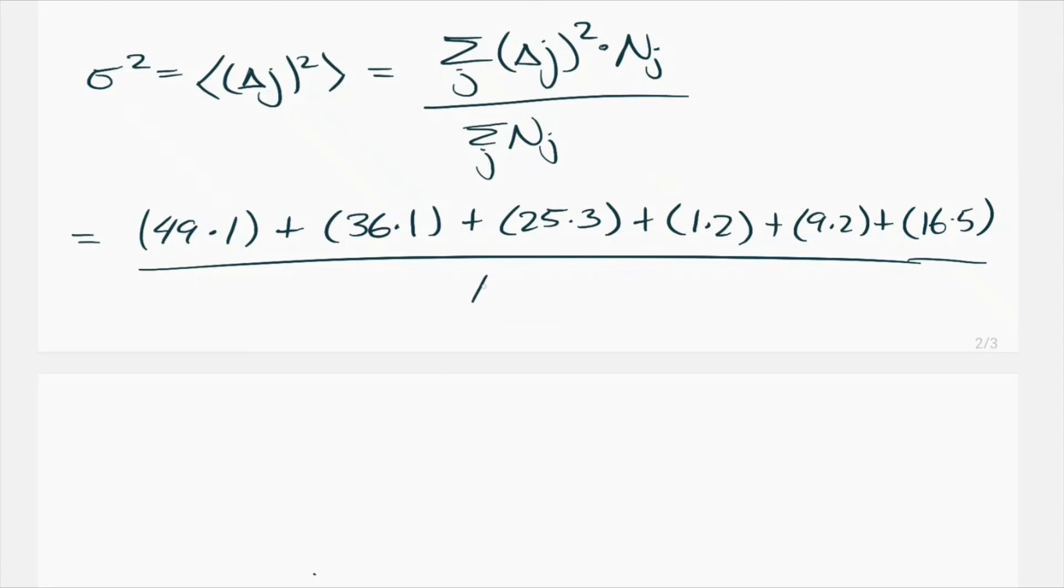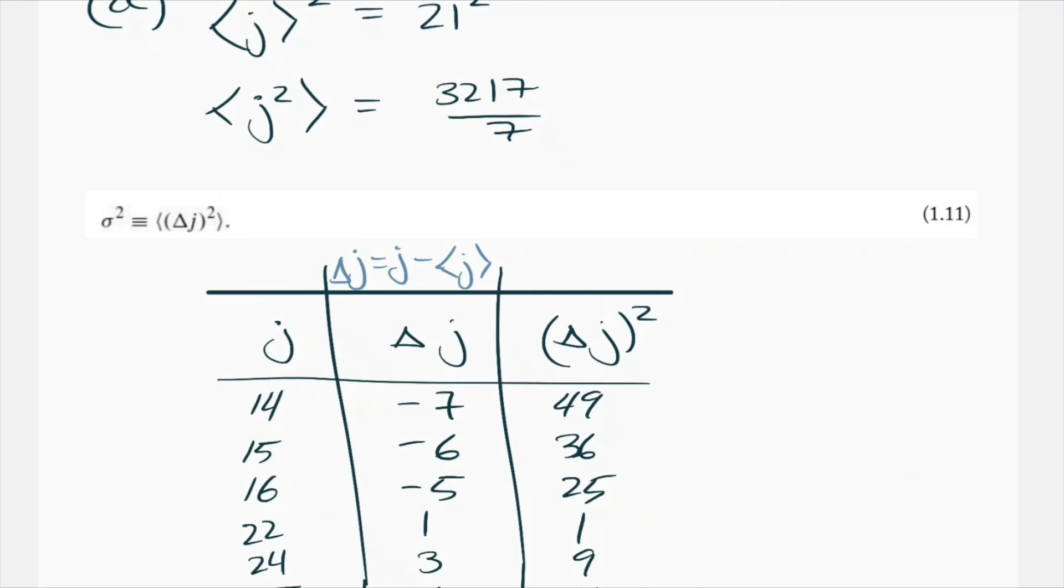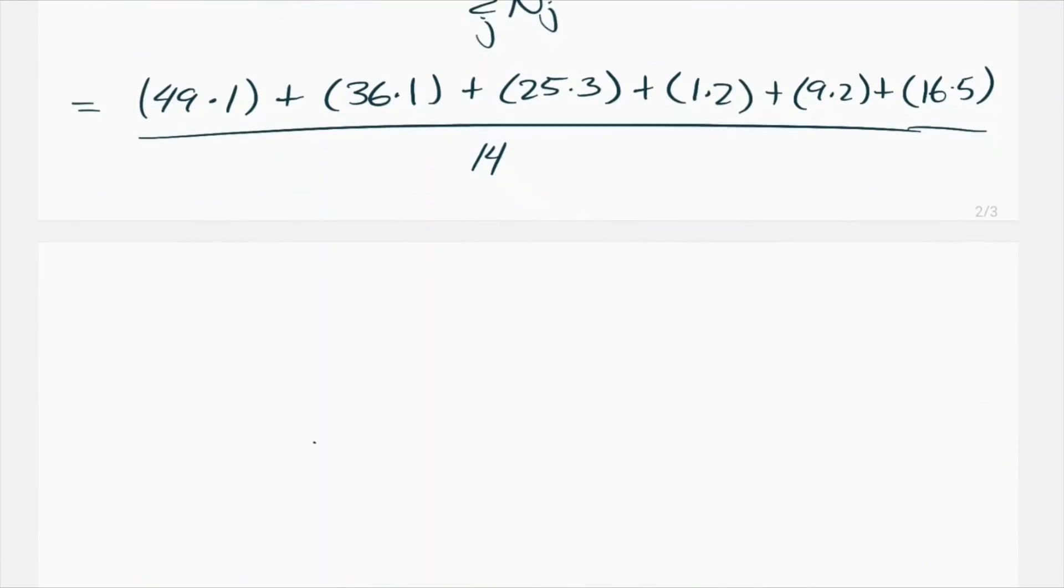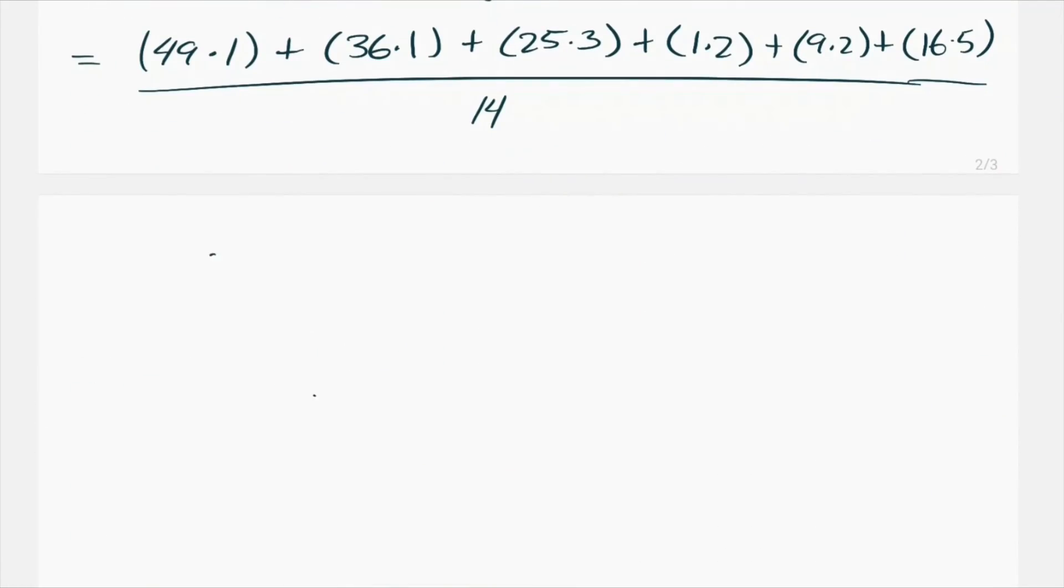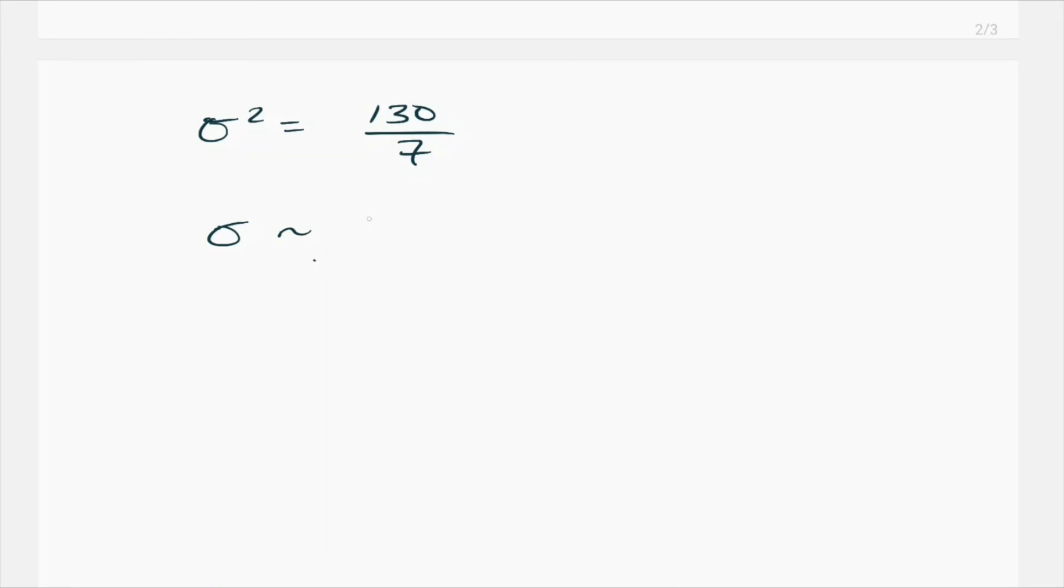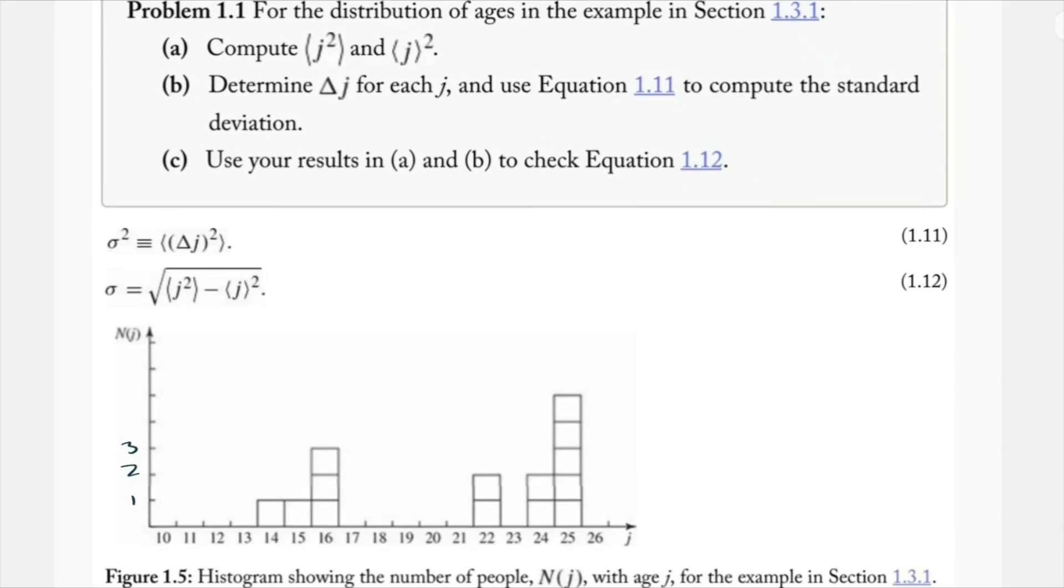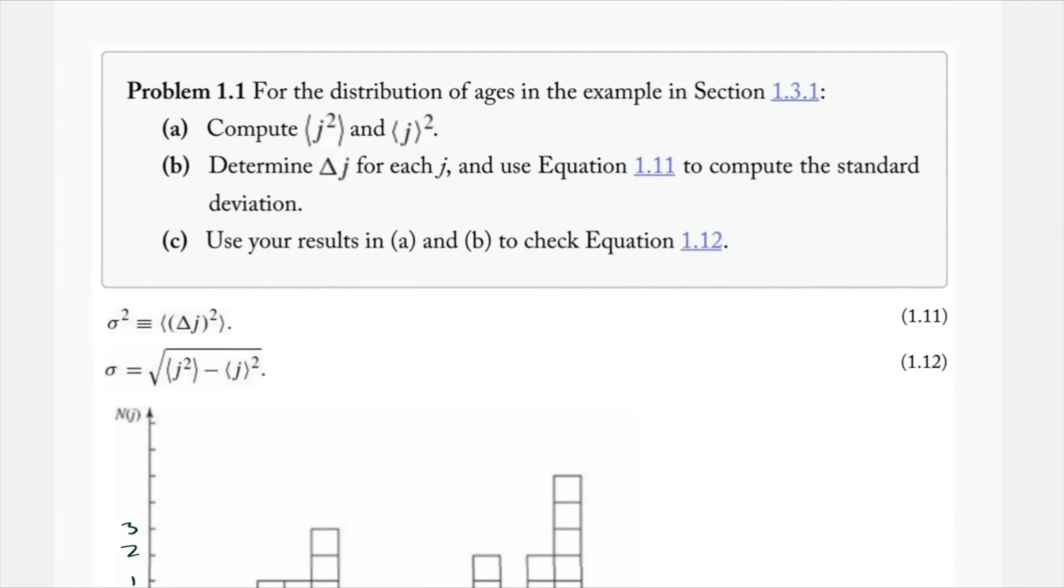Again, you can do the math, plug it into a calculator, whatever you want to do. Sigma squared comes out to 130 divided by seven. And of course, we take the square root. Sigma is approximately 4.31. So that's part B right there. We've used equation 1.11. We've got the standard deviation. Now part C.